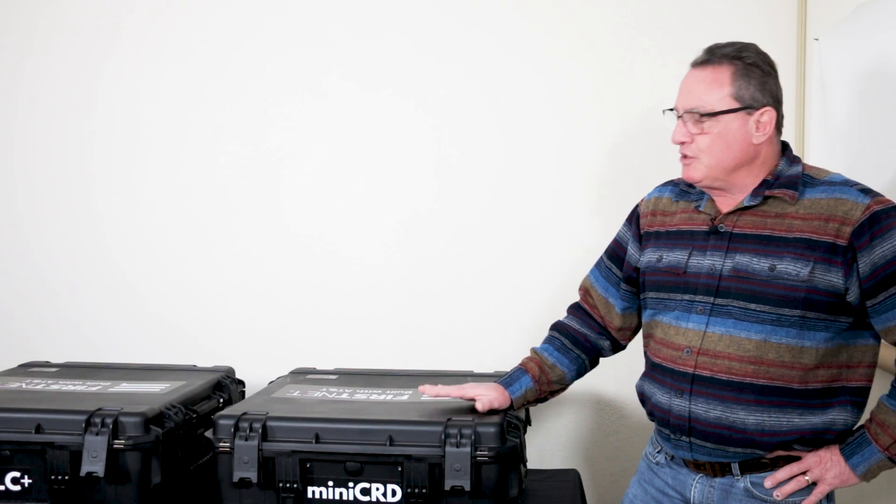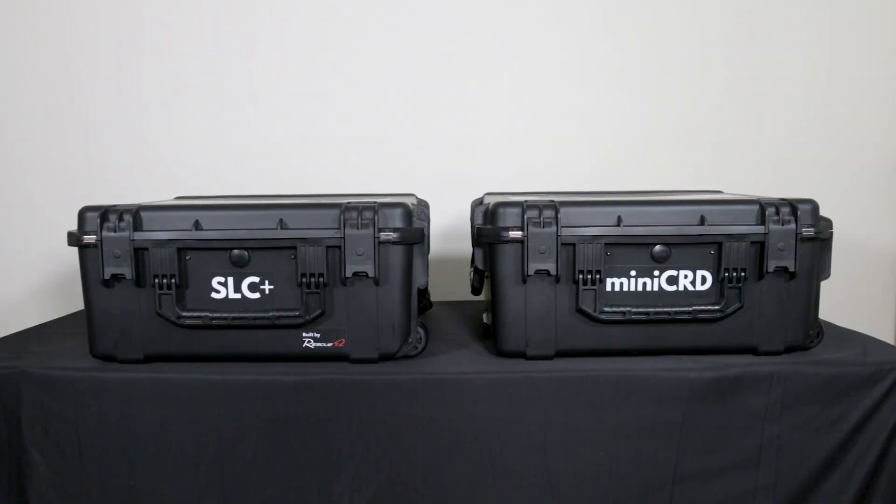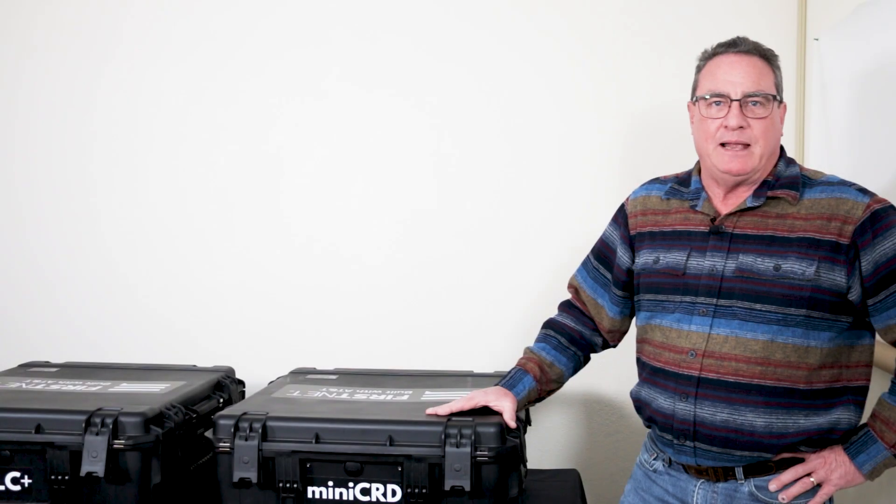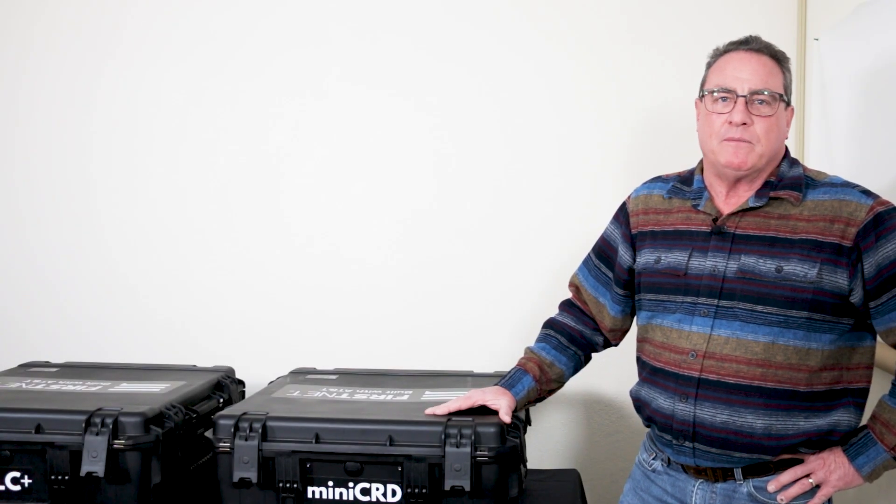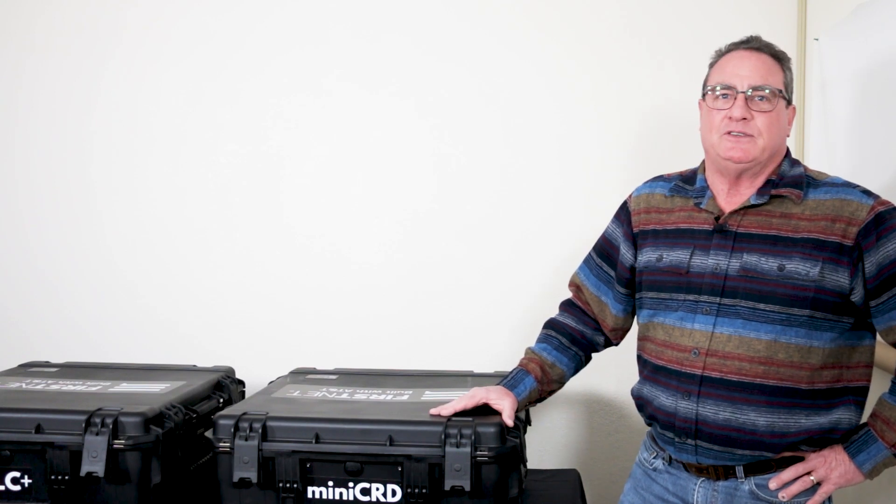CRD stands for Compact Rapid Deployable and what you're looking at here in this table is a complete deployable miniature first net cell tower with satellite backhaul. All you need to do is give it power. Let me show you the pieces of this system.